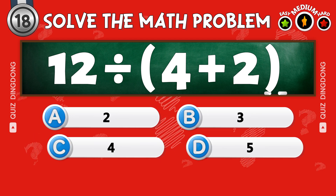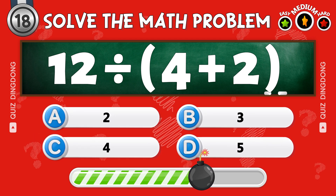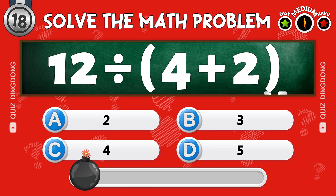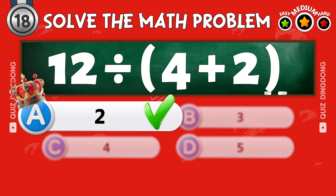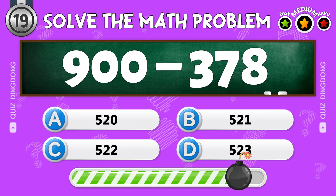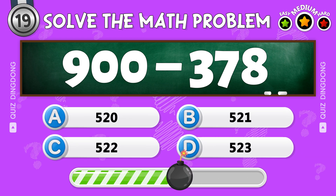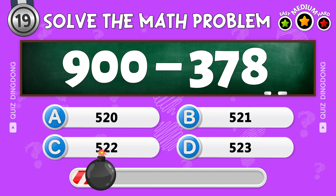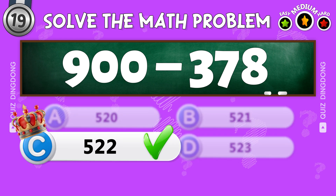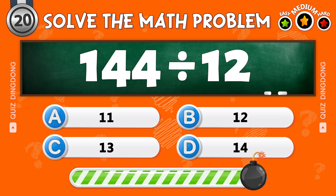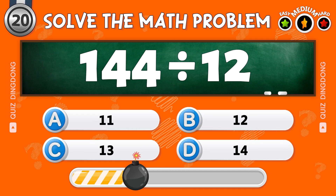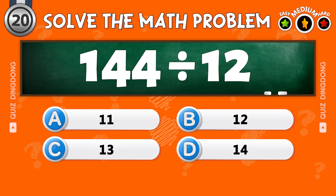Next question. You got it, the answer is 2. What is 900 minus 378? Spot on. What is 144 divided by 12? Yes, the answer is 12.